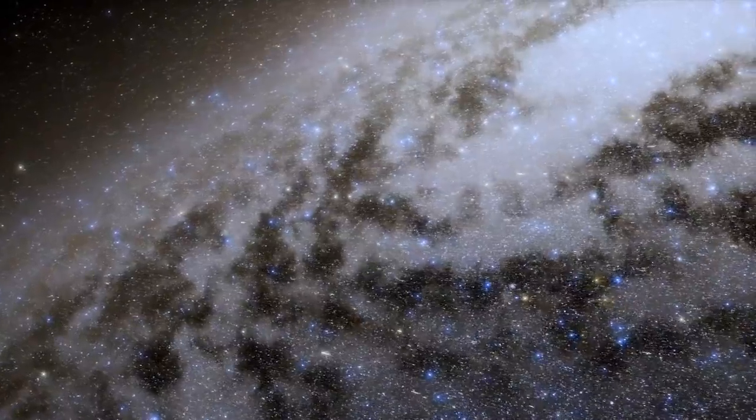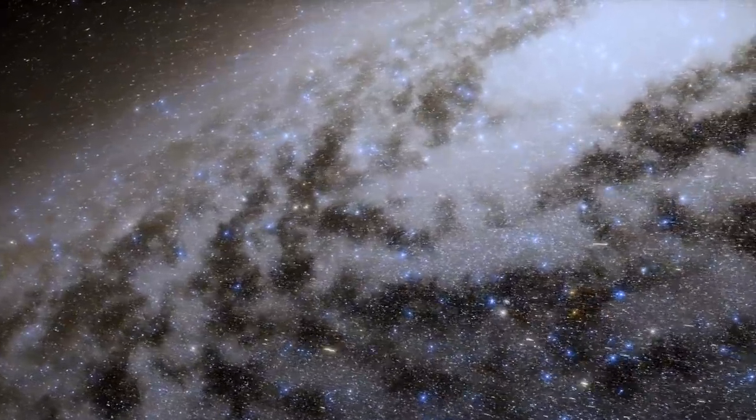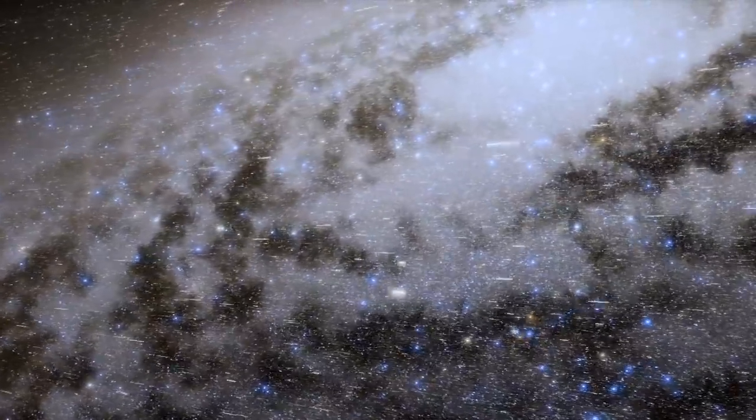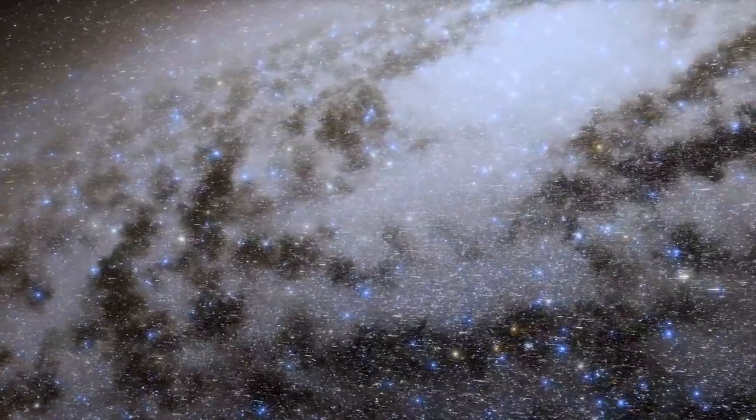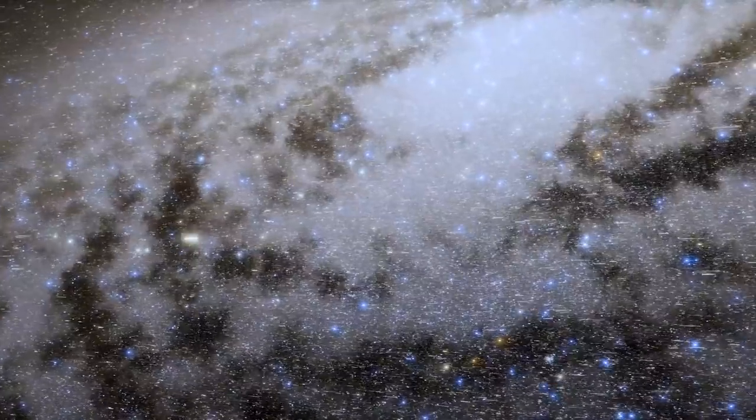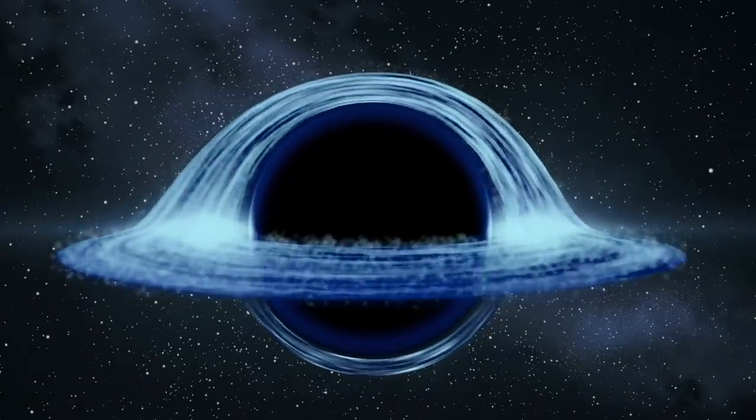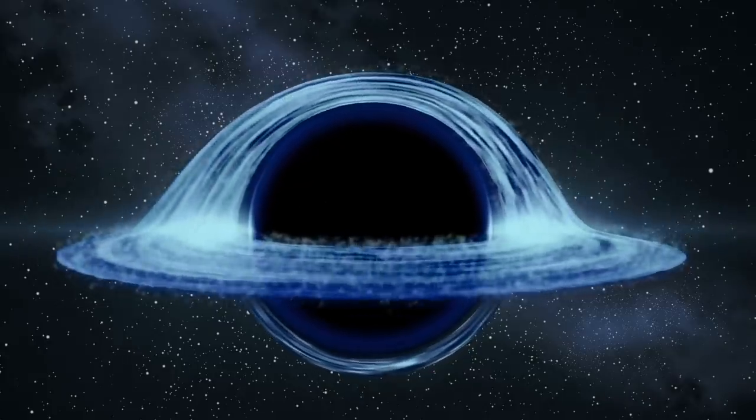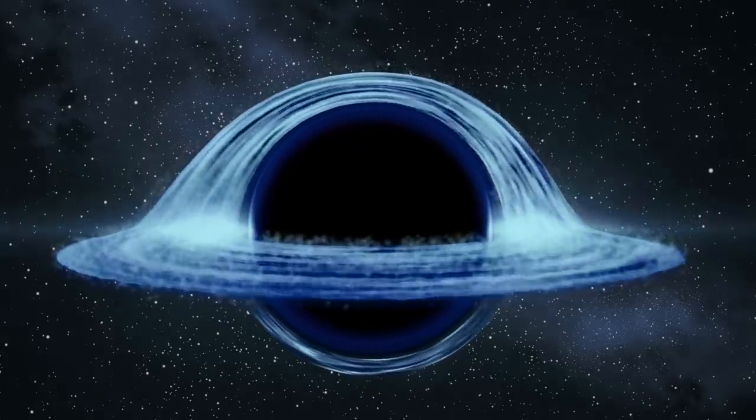There are two types of black holes that are relevant to our discussion. The first does not rotate, is electrically neutral—that is, not positively or negatively charged—and has the mass of our sun. The second type is a supermassive black hole with a mass of millions to even billions of times greater than that of our sun.